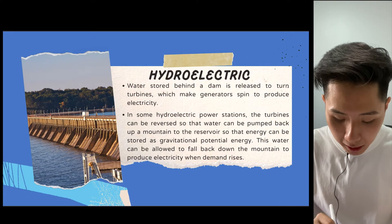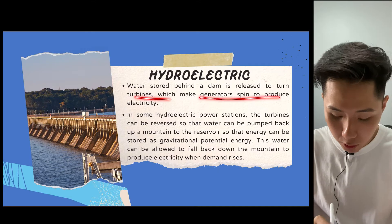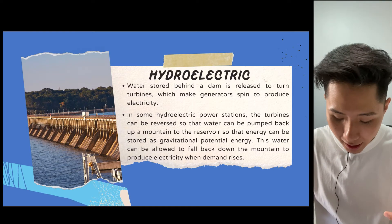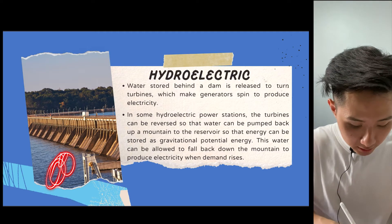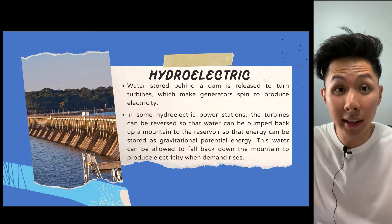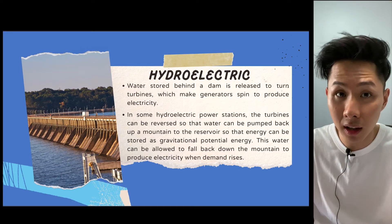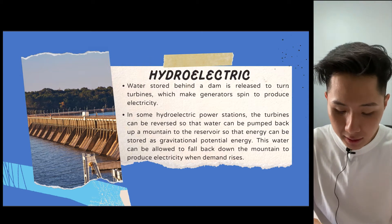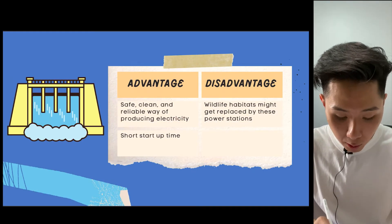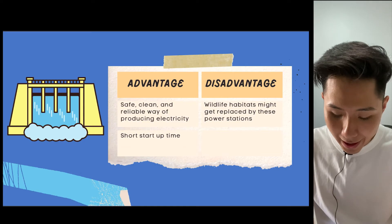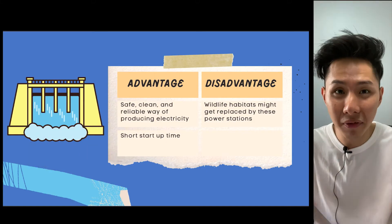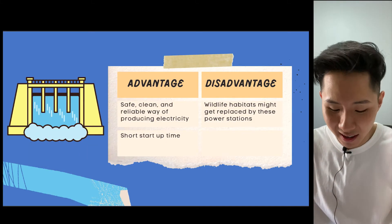Next is hydroelectricity. Water stored behind a dam is released to turn a turbine, which makes generators spin to produce electricity — basically using water flow to create energy. The turbine turns the generator to create electricity, which we'll learn more about in electromagnetic induction. The advantage is that it's a safe, clean, reliable way to generate power with a short start-up time. The disadvantage is that wildlife habitats may be disrupted, as aquatic animals struggle to survive in altered water conditions.